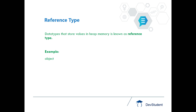If you are storing values in object type, the values are stored in heap memory, and if the memory is allocated in heap, they are known as reference types. So these are two different types of memories, and they are called two different types: value type and reference type.